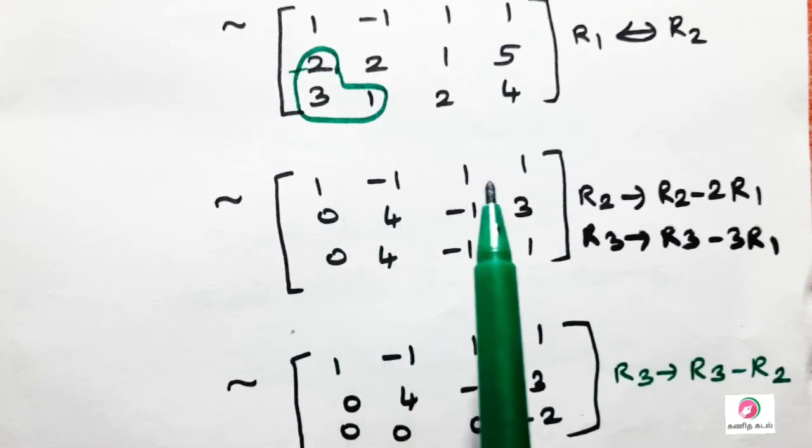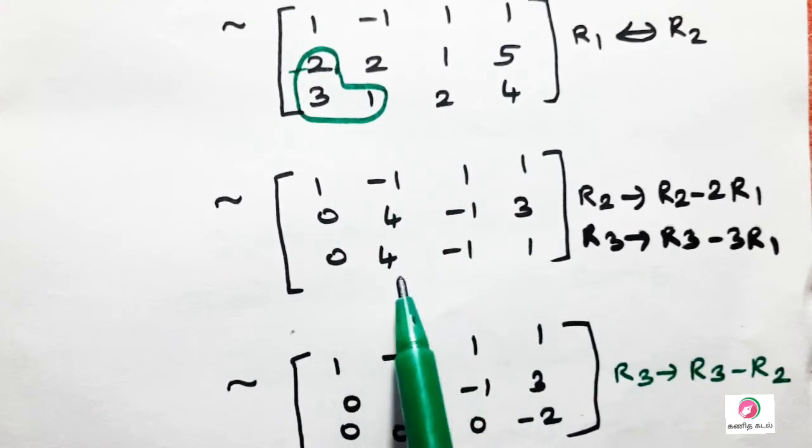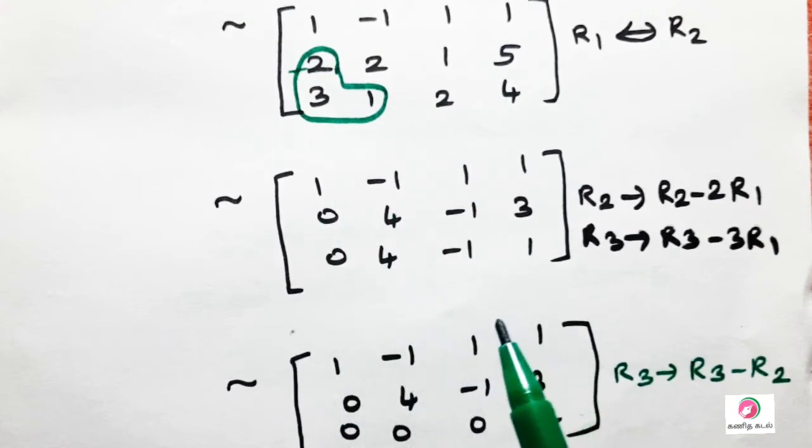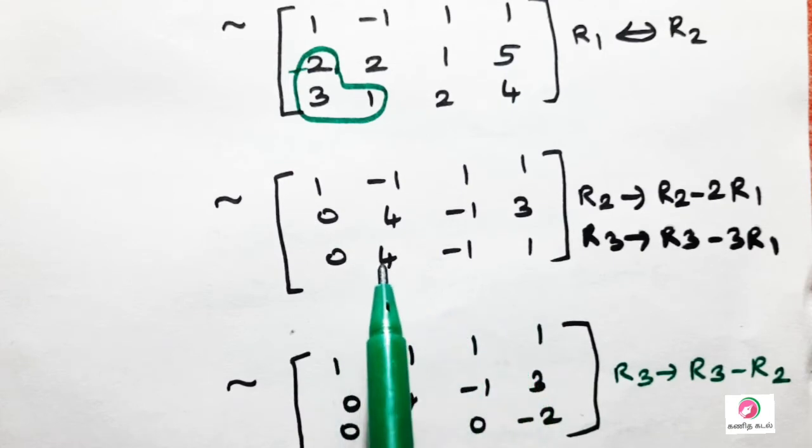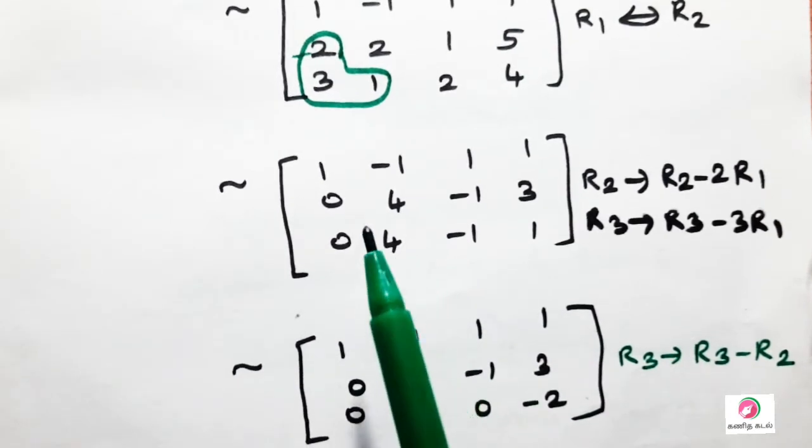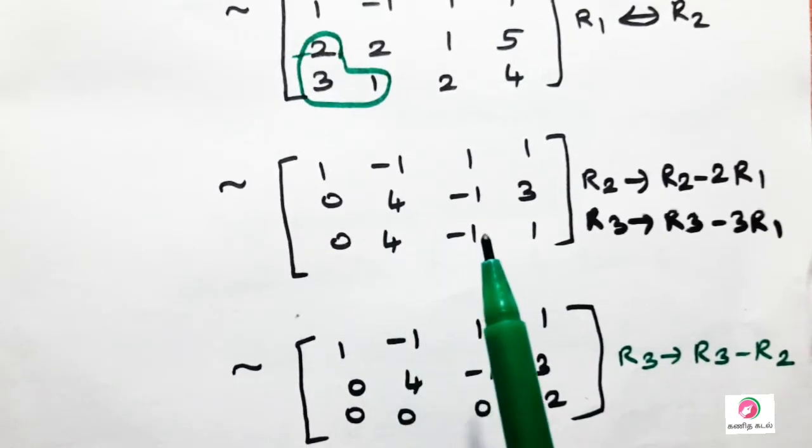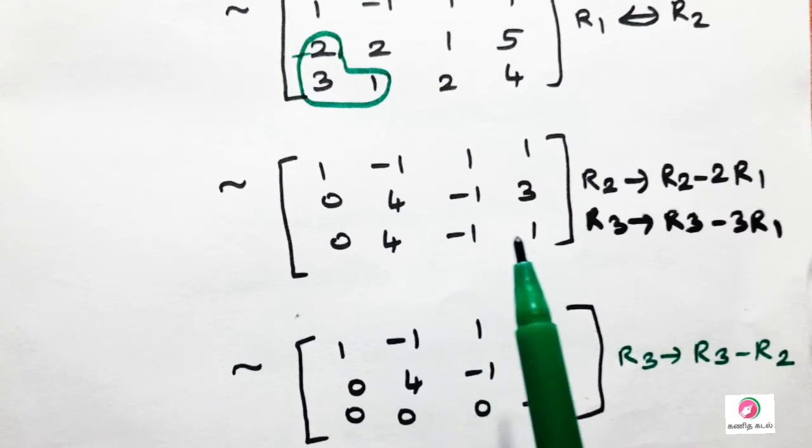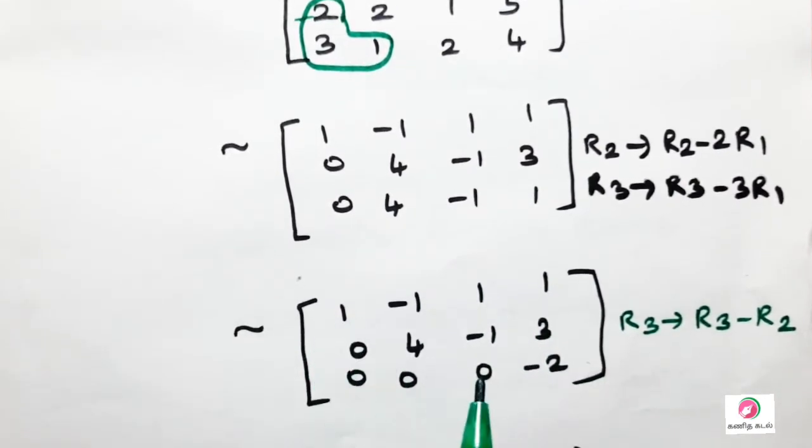We do R3 tends to R3 minus R2. Therefore, 4 minus 4 is 0. Minus 1 plus 1 is 0, then we get 0. Now, the diagonal is 0.